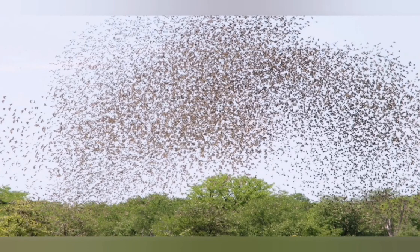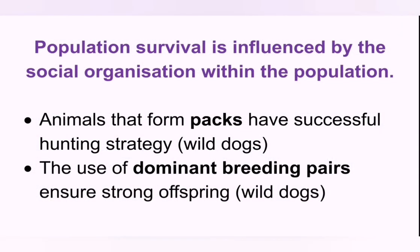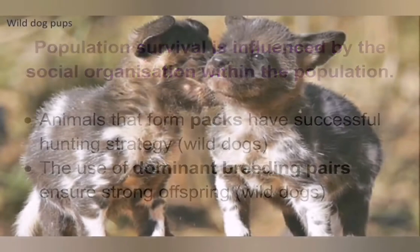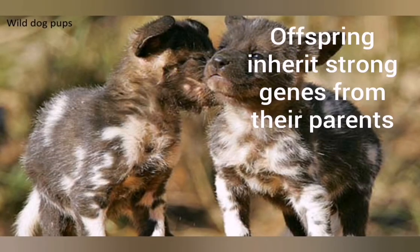The second way of social organization is called living in a pack. Animals that form packs have successful hunting strategies, as we see especially in the African wild dog. Wild dogs also reproduce using a dominant breeding pair — only the alpha male and the alpha female are allowed to breed — which means offspring have a greater chance of inheriting strong genes from their parents.